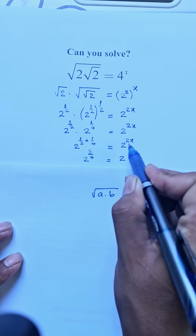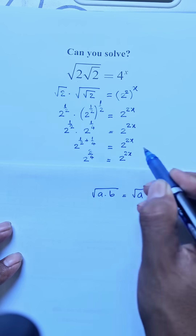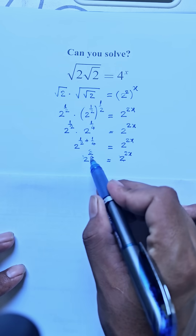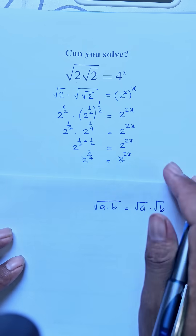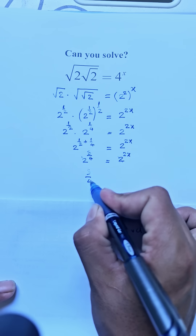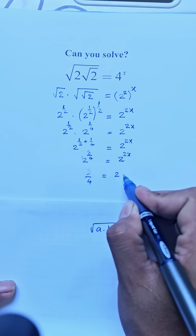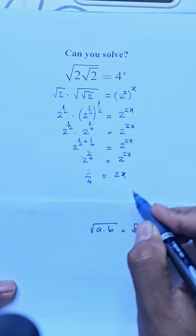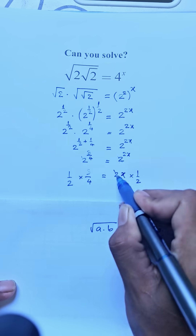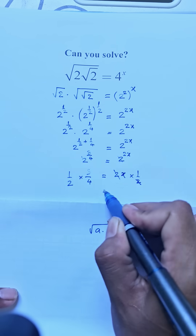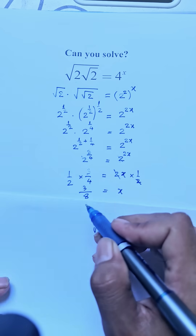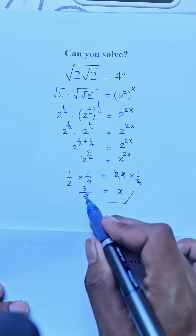Since the bases are the same, we simplify by setting the exponents equal: 3/4 equals 2a. Then we multiply both sides of the equation by 1/2. We simplify and get 3 divided by 4 times 1/2, which gives us 3/8. So the answer is a equals 3/8.